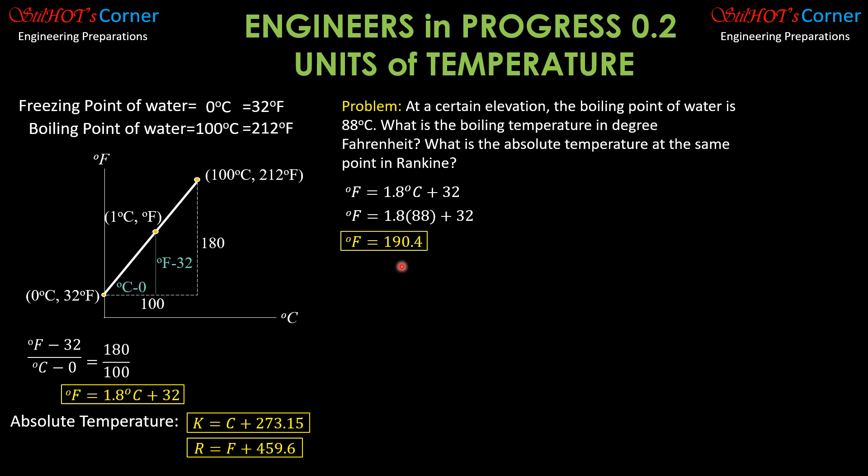Then for the absolute temperature in Rankine, Rankine is degree Fahrenheit plus 459.6. So substitute: so temperature in Rankine is equal to 190.4 plus 459.6, so it is equal to 650 Rankines.